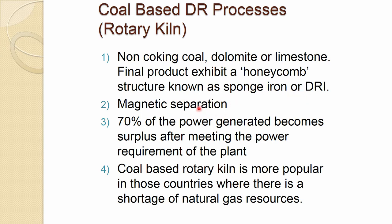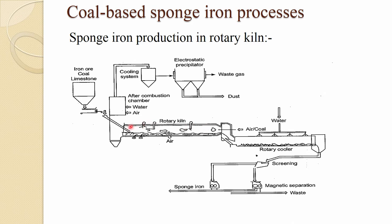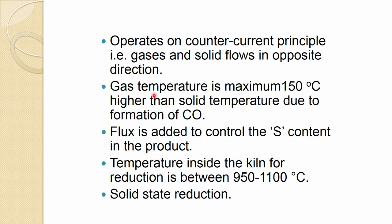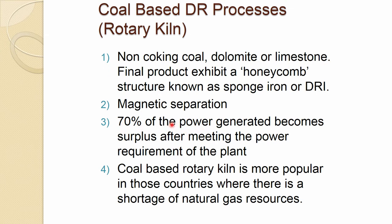Magnetic separation is used to separate the product from waste. Seventy percent of the power generated becomes surplus after meeting plant power requirements, since waste gases are combusted for power supply. Coal-based rotary kiln is more popular in countries where there is a shortage of natural gas resources or where high-ranking coal is not available.